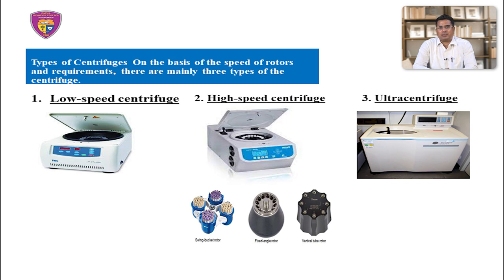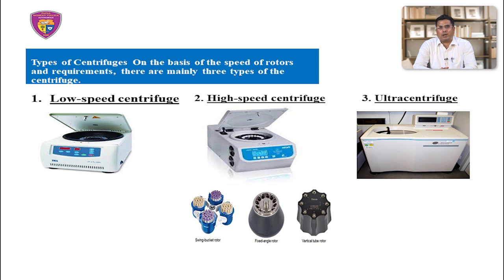The second type is the high-speed centrifuge, which has high-speed rotors and is used in more sophisticated biochemical applications. It has a temperature control mechanism in the rotor chamber, as most biochemicals have optimal thermal requirements. Its maximum speed is 15,000 to 20,000 RPM. It generally has three types of rotors: fixed angle, swinging bucket, and vertical rotors. Speed and temperature required for sensitive biological samples can be controlled. A diagram is shown in this slide.